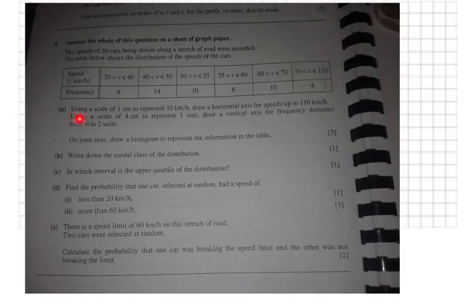Let's have a look. Using a scale of 1 centimeter to represent 10 kilometers per hour, draw a horizontal axis for the speeds up to 110 kilometers per hour. And using a scale of 4 centimeters for 1 unit, draw a vertical axis for frequency densities. This is going to be a histogram with frequency density, and that is very important. It's not just frequency, it's frequency density.